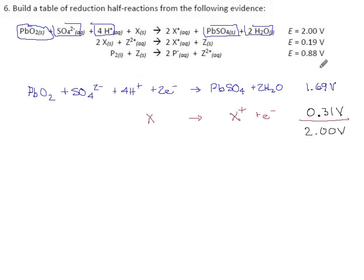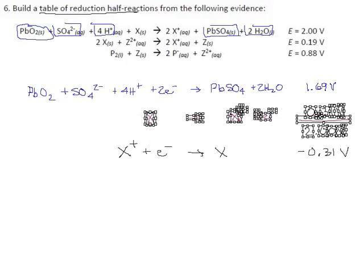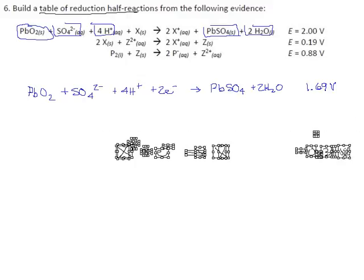Fair enough. Now if we're supposed to build a table of reduction half reactions like the one in our data book, this reaction is fine because I copied it out of the data book. What's wrong with this one? It's got the electrons on the wrong side. This isn't a reduction, this is an oxidation because it loses electrons. If we're going to write this in our data book we got to flip it around and get X plus plus an electron produces X metal, and now that voltage is minus 0.31 volts.